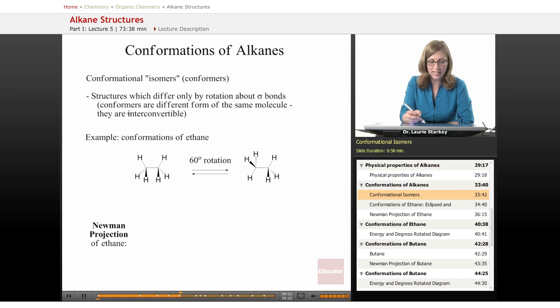And the way they are related is they are structures which differ only by rotation about sigma bonds. So conformers are different forms of the same molecule, and they are interconvertible because the way we go from one to the other is simply by rotation around a sigma bond.